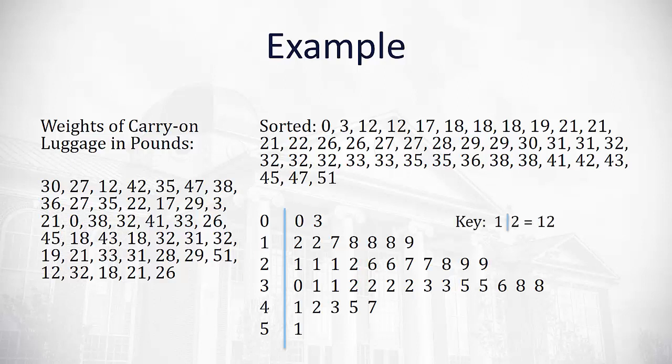Every stem and leaf plot will need some type of key, so you'll just have an example off to the side that shows the tens digit and the ones digit is what's being interpreted here, so we don't confuse it with possibly a hundreds digit or a thousands digit.